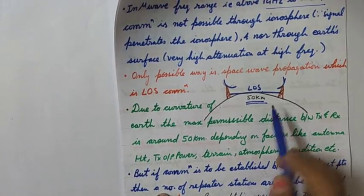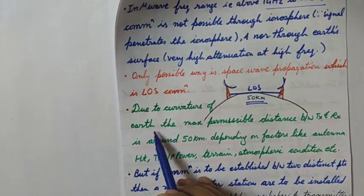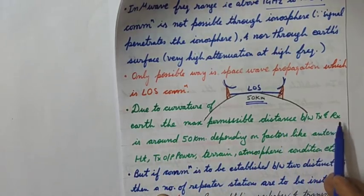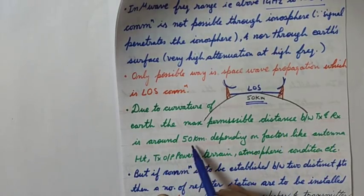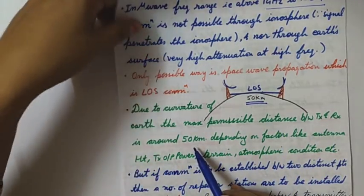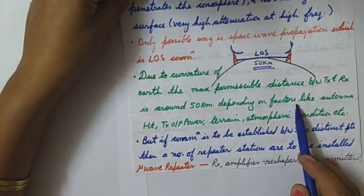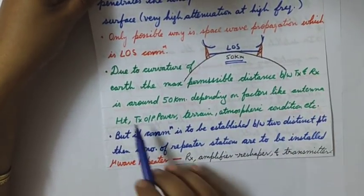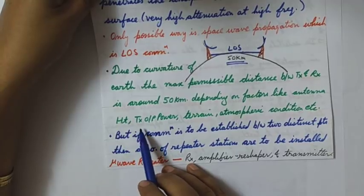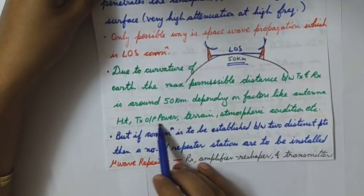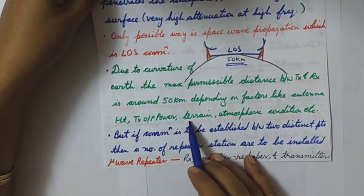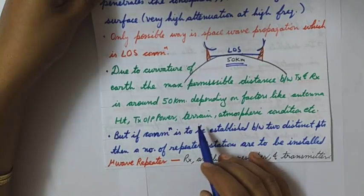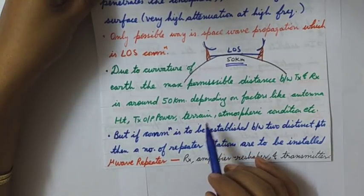More than 50 kilometers is not visible. So due to the curvature of the earth, the maximum permissible distance between transmitter and receiver is around 50 kilometers, depending upon factors like antenna height, transmitter output power, and terrain — terrain being the shape or roughness of the earth.